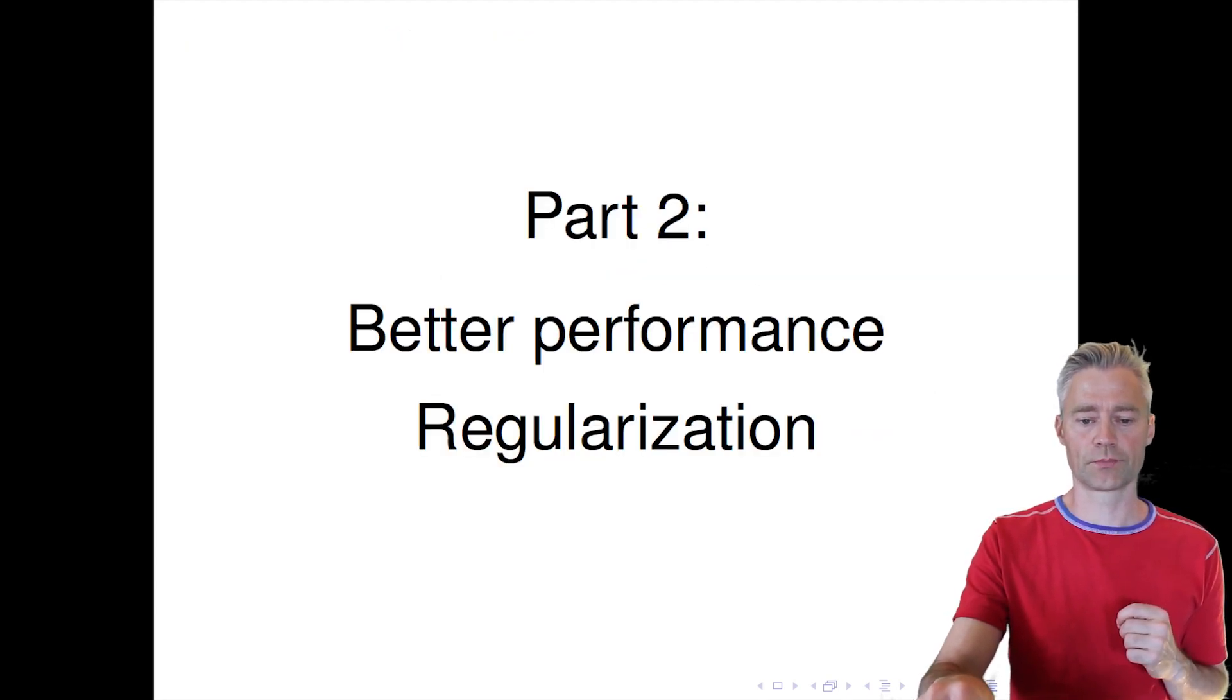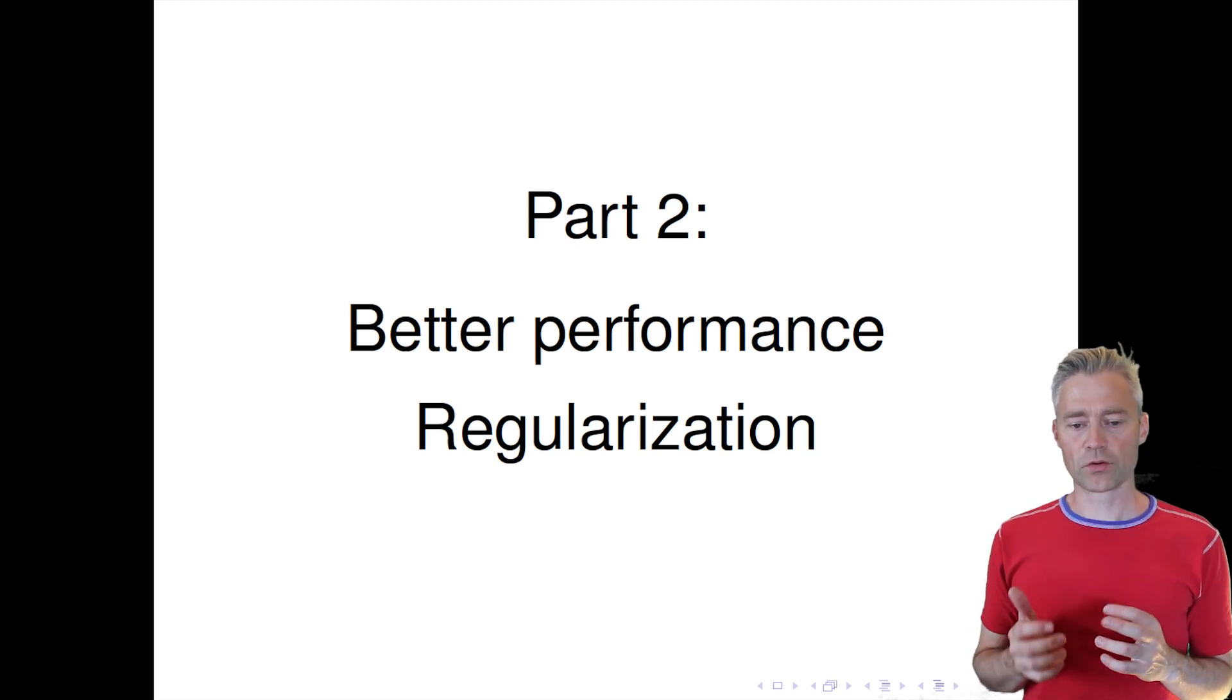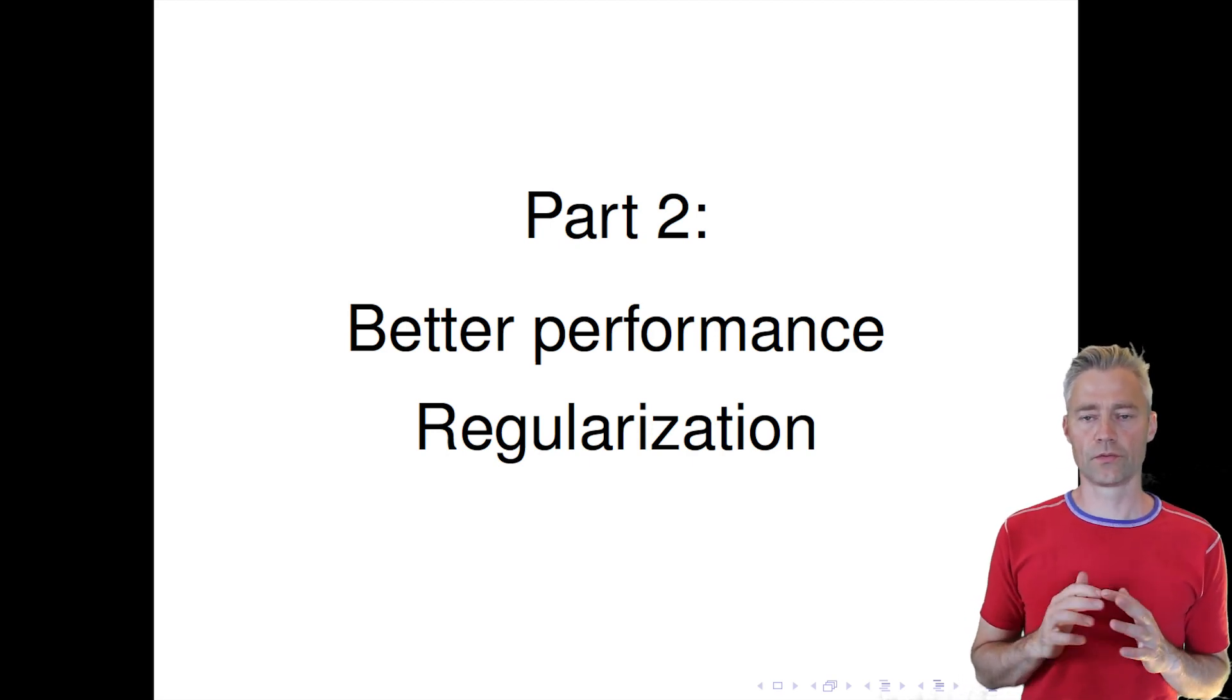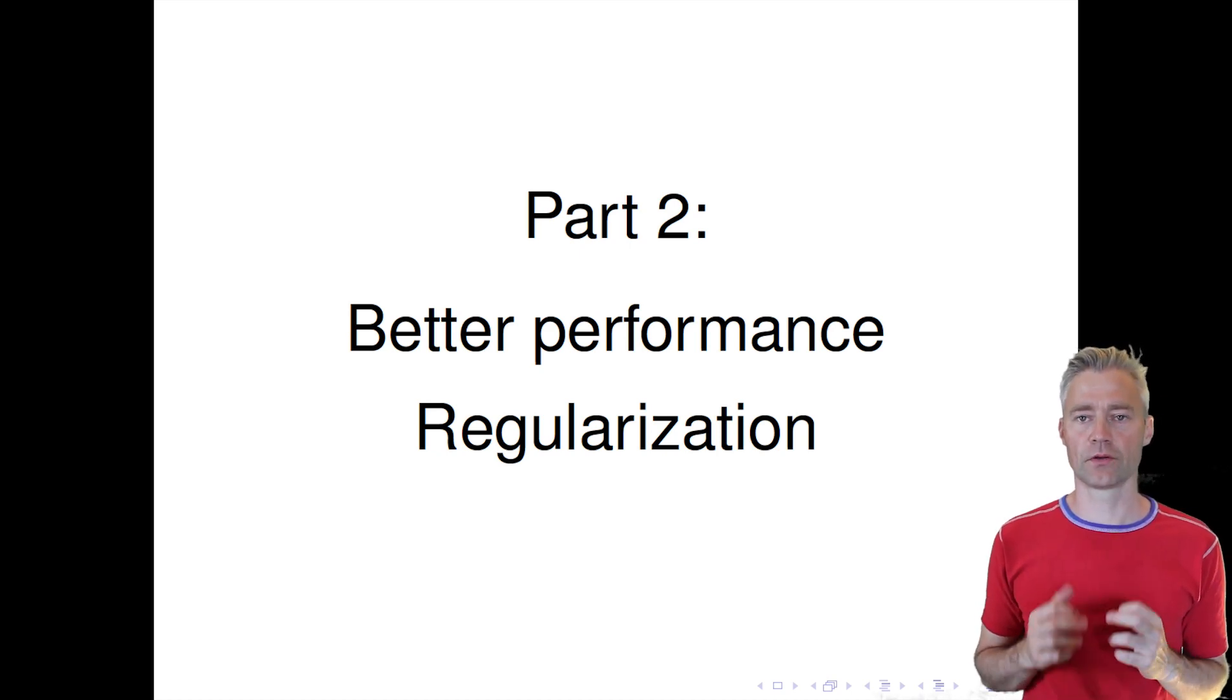So this was a little bit about batch normalization, and this concludes the part on initialization and other methods to get faster convergence.